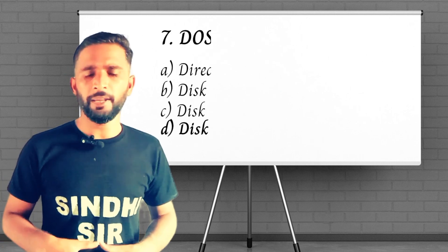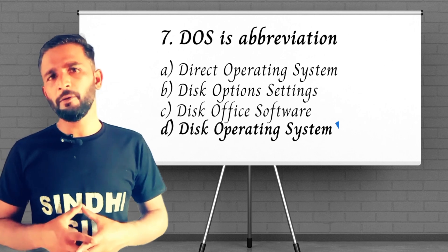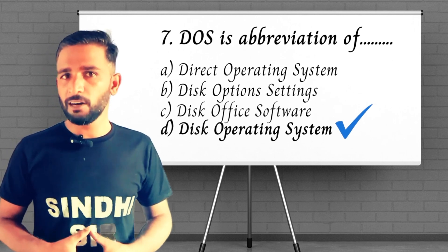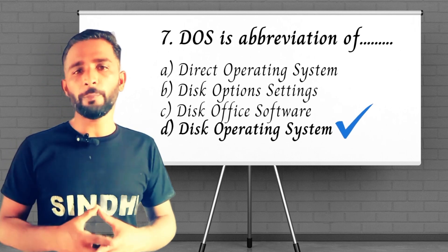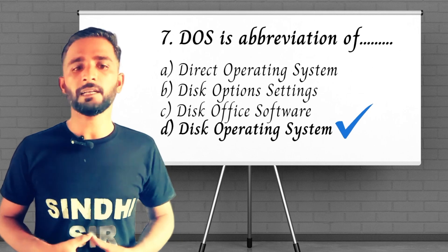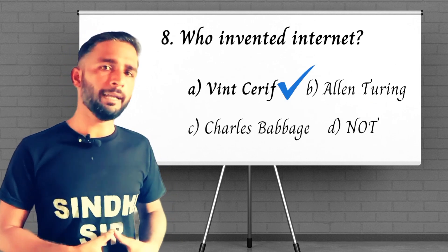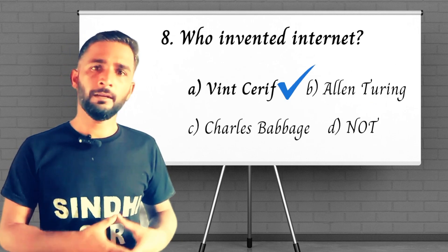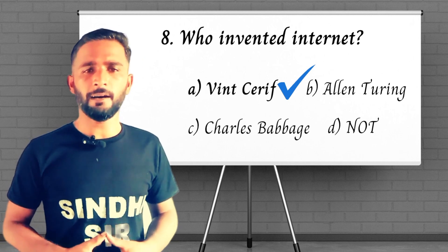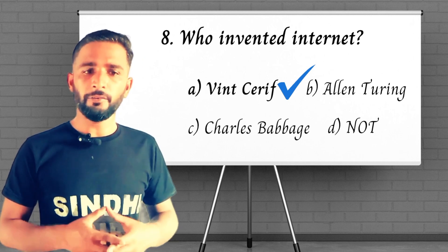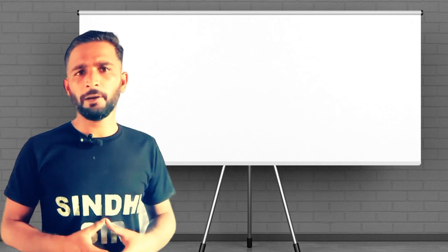Question: dash is the abbreviation of — answer is option D, Disk Operating System (DOS). Question number eight: who invented the internet? Answer is option A, Vint Cerf.